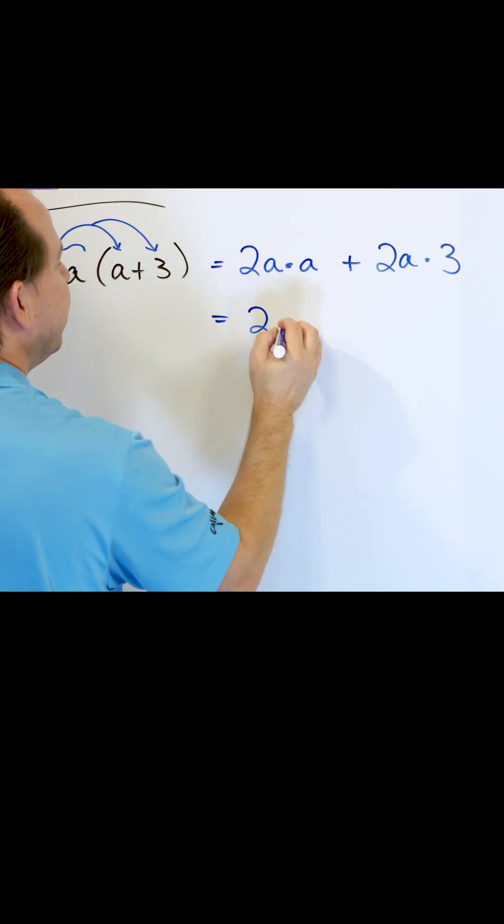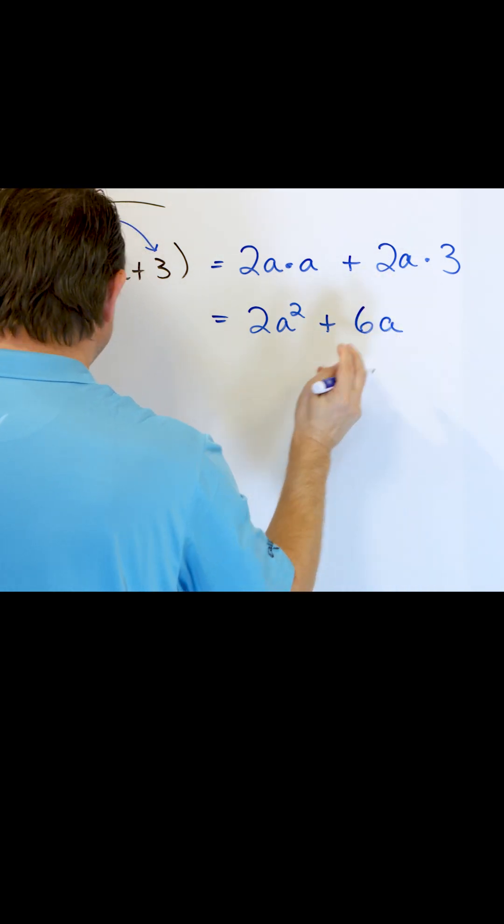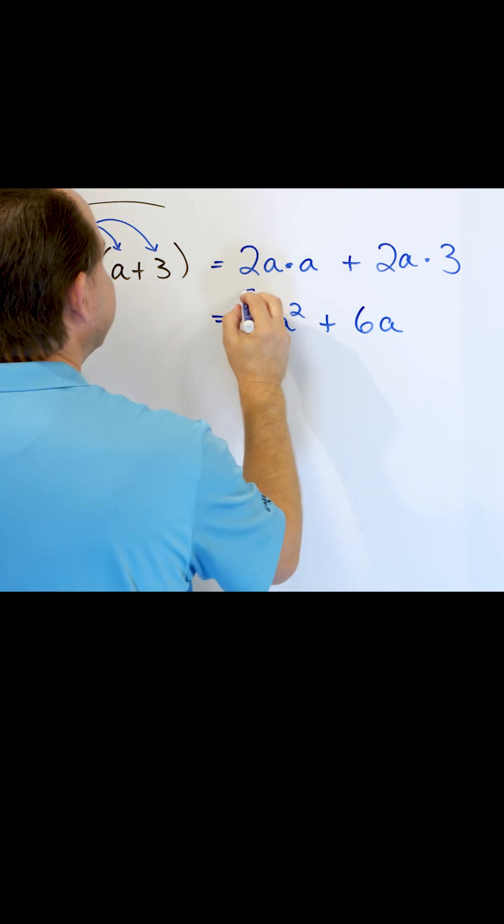And then 2 times a times a is just 2a squared. And then we multiply the numbers: 2 times 3 is 6 and then a. So we have 2a squared plus 6a. This is the final answer.